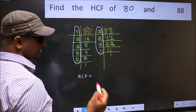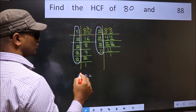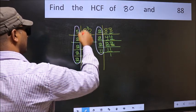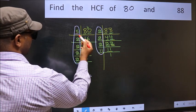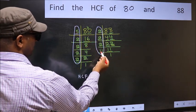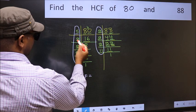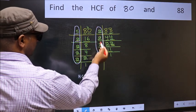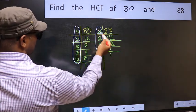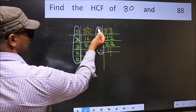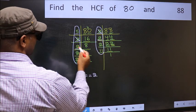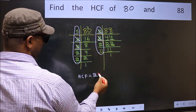So now let us find the numbers which should be present here and here. Starting with the number 5. Do we have 5 here? No. Next number 2. Do we have 2 here? Yes. So cut 2 right here. Next number 2. Do we have 2 here? Yes. So cut 2 right here.